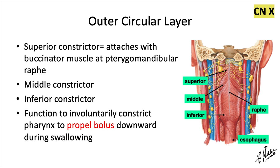First, we'll talk about the outer circular layer of the pharynx. This picture is a posterior view, and we've removed the vertebral column so that you can see what's going on. You can appreciate the internal jugular vein, the common carotid artery that branches up into the internal and external carotid arteries. We have the deep cervical lymph nodes, and those four components — the internal jugular vein, common carotid artery, deep cervical lymph nodes, and the vagus nerve — make up what's inside the carotid sheath. Here we have the esophagus and the thyroid gland peeking out on either side. So these pharyngeal muscles are converging at the back of the throat.